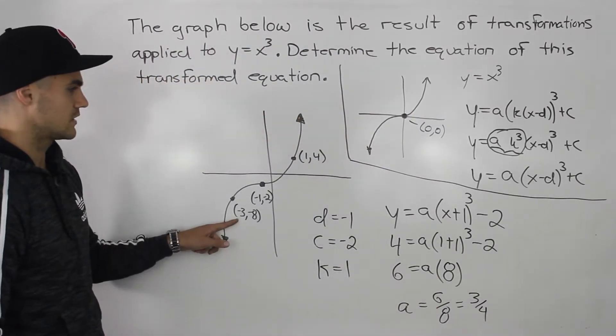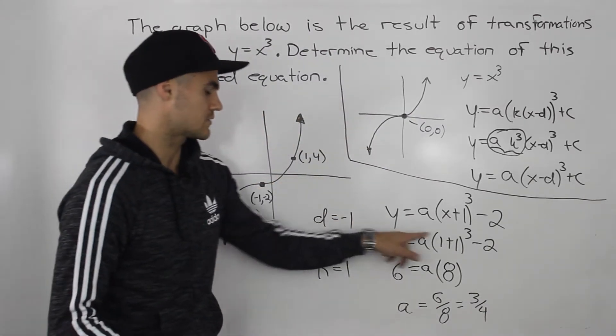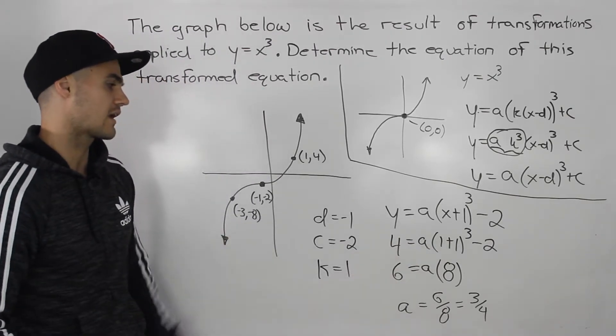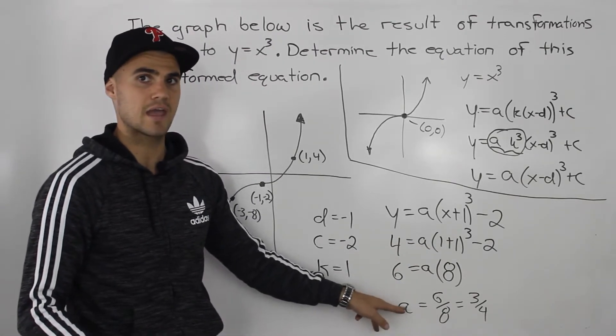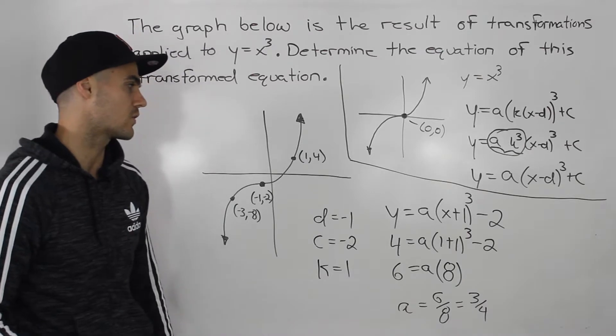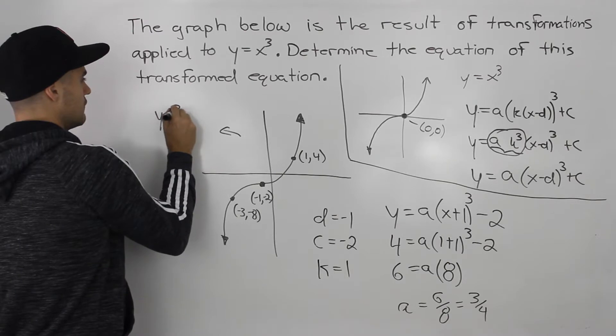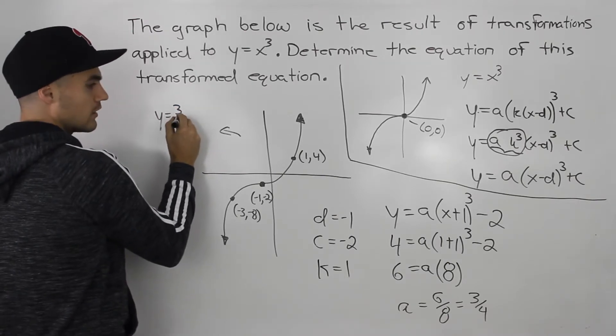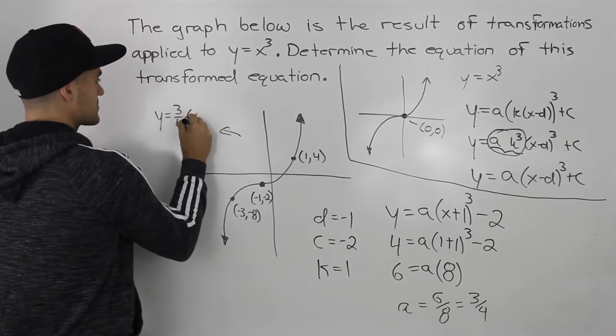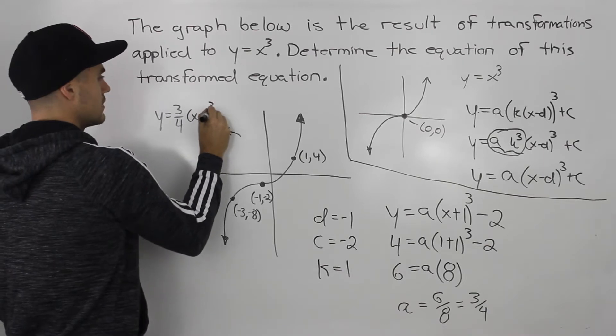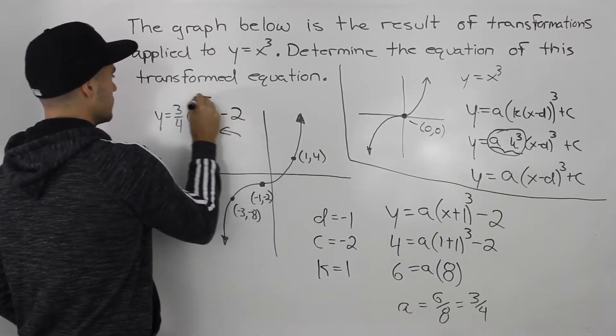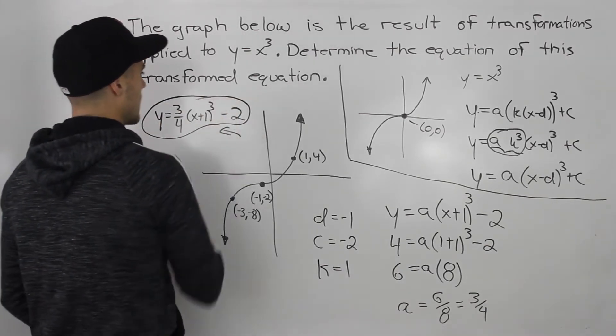And you can also, instead of using 1 and 4 like we did here, you can also use negative 3 and negative 8. And you would still get that same a value of 3 over 4. So we're done now. So the final equation of this is 3 over 4 x plus 1 to the power of 3 minus 2. So that is our final answer.